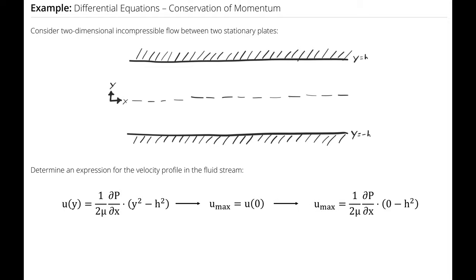Which means when I solve that equation at a y position of 0, I'm left with u_max = -h²/(2μ)(∂P/∂x).